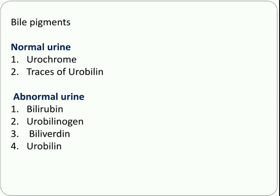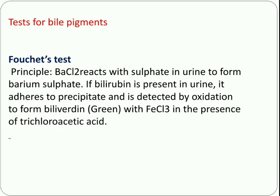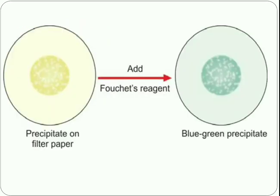First we will discuss in detail about Fauci's test. The principle is: barium chloride reacts with the sulfate present in the urine to form barium sulfate. If bilirubin is present in the urine, it adsorbs to the precipitate and is detected by oxidation to form biliverdin, which is green in color, in the presence of ferric chloride. We can see that the filter paper contains a precipitate of barium sulfate; when Fauci's reagent is added, it gives a blue-green precipitate when bilirubin is present, indicating a positive reaction.